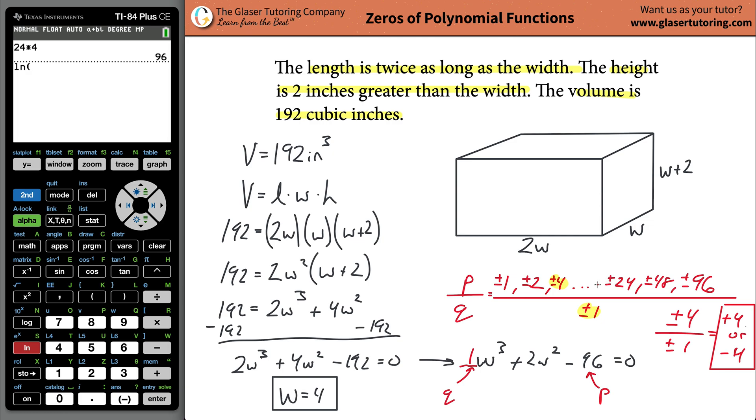This rational zero theorem gives us a list of possibilities. Maybe one of them will work, maybe none will work. That's how you would have done it without a calculator. You would have listed out all those possibilities, taking four or one or two or negative two or positive 96, and you're going to plug them in and see which one gives you zero. The only one that's going to do it is positive four. Hopefully you can use a calculator because if not, as they say in the movie Taken, good luck.